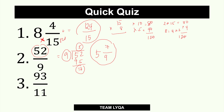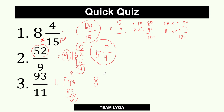Next, we have 93 over 11. Same process — this is an improper fraction, so divide it. 99 is too high, but 88 works: 8 times 11 is 88, with a remainder of 5. Reconstruct: 8 is the whole number, 5 goes on top, and 11 stays as the denominator — 8 and 5 over 11.